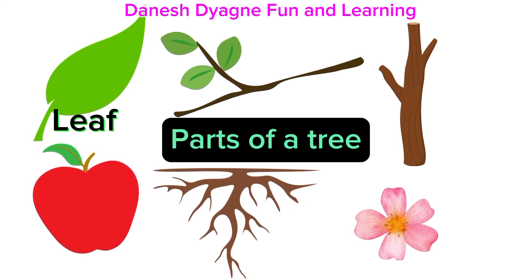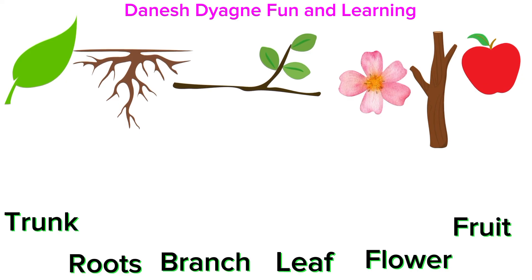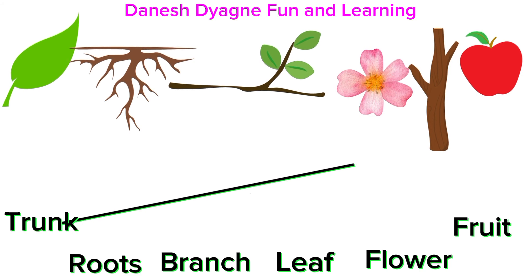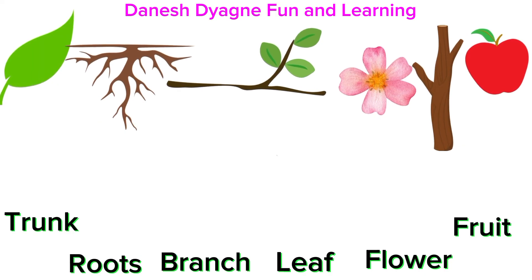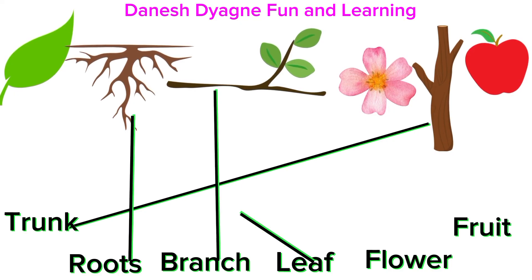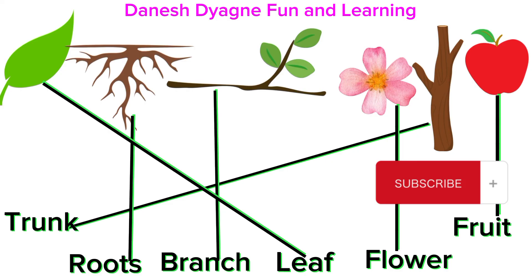Let's review: leaf, fruits, trunk, roots, branch, flower. Let's match the picture with the correct words: trunk, roots, branch, leaf, flower, fruit. One more time: trunk, roots, branch, leaf, flower, fruits. Thank you for watching, see you in the next lesson.